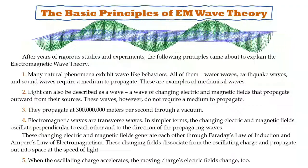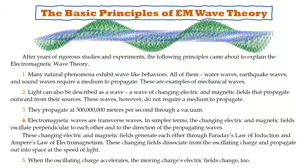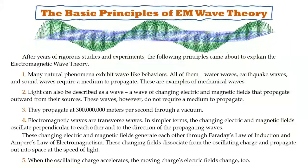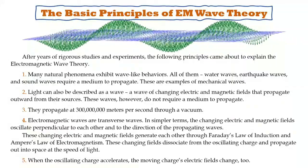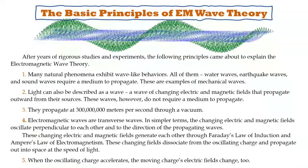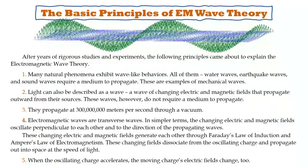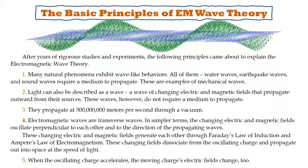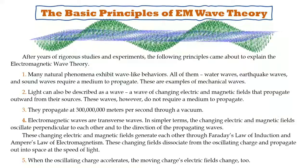Number four: Electromagnetic waves are transverse waves. In simpler terms, the changing electric and magnetic fields oscillate perpendicular to each other and to the direction of the propagating waves. These changing electric and magnetic fields generate each other through Faraday's law of induction and Ampère's law of electromagnetism. These changing fields dissociate from the oscillating charge and propagate out into space at the speed of light.